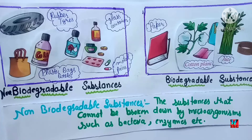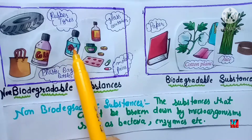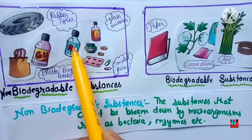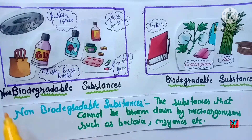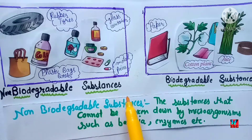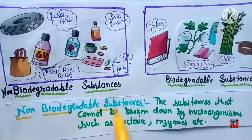In this video we will discuss the difference between biodegradable substances and non-biodegradable substances. Tire, plastic bags, glass containers, or metal pieces — if we want to decompose them in the environment, they will not be decomposed. So these are all examples of non-biodegradable substances.